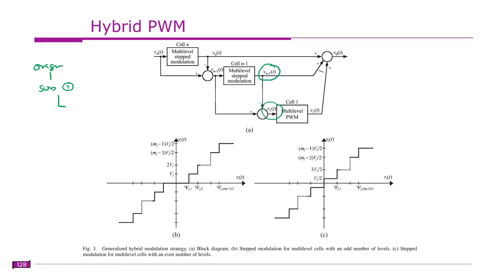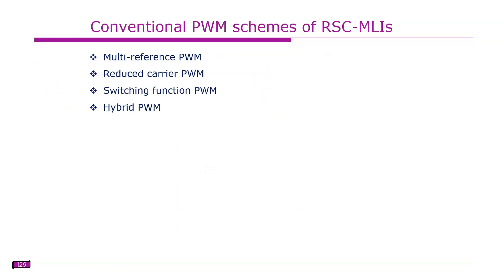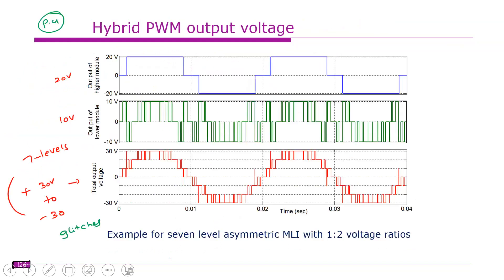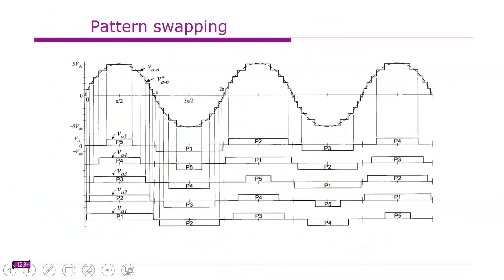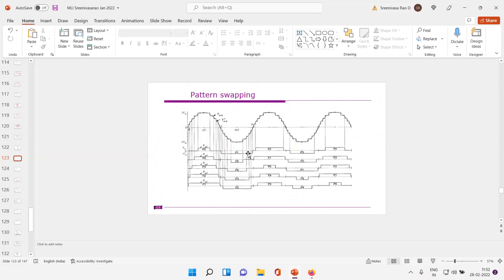So this is how it operates. This is about asymmetrical control of cascade H-bridge inverters. If you have no questions, we will move on to the next topic.